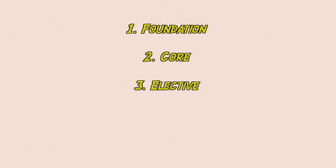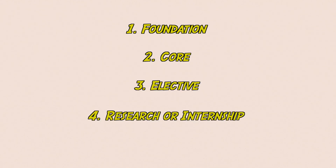Typically a Master of Data Science degree is split up into four sections. You've got the Foundation, Core, Elective and Research or Internship section. In the Foundation section, you'll mostly be doing foundation subjects in Statistics and Computer Science to help you prepare for all of the other data science units. Think of this as learning the basic tools that'll help you conquer the data science units.